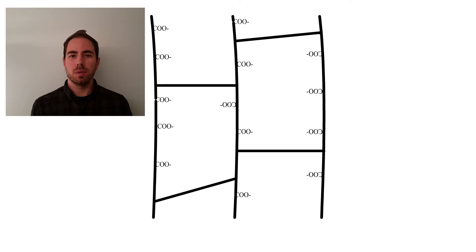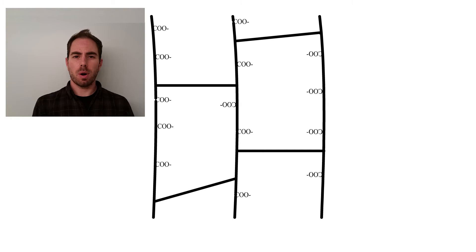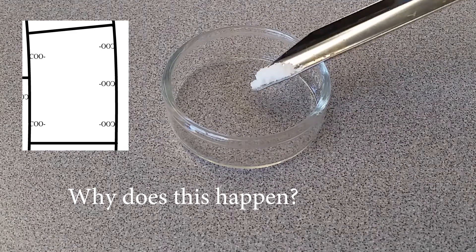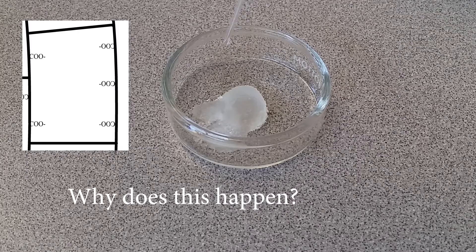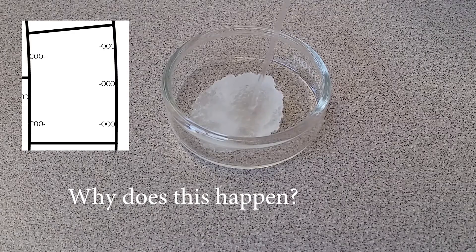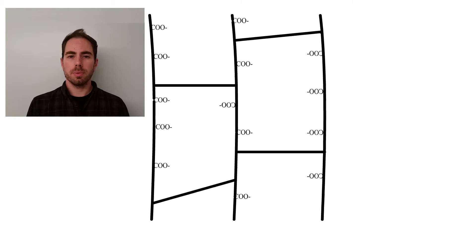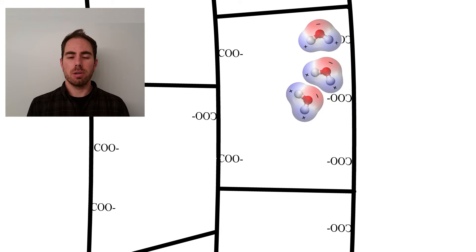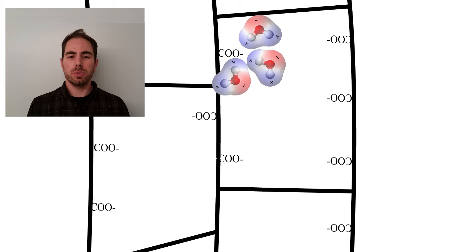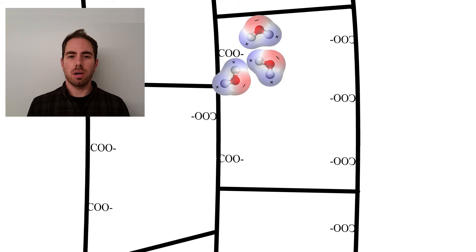Getting back to the polymer web structure, we can see that the polymer has a bunch of carboxylate groups — written COO- — and they have a bunch of negatively charged oxygen atoms attached to them. The polymer is sticky because those negatively charged oxygen atoms are attracted to the partially positive hydrogen atoms in water. The water goes into the gel and the negatively charged oxygens hold the water inside, causing the gel to swell.